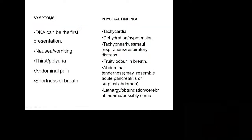The symptoms of diabetic ketoacidosis: whenever a diabetic patient presents with severe nausea and vomiting — the patient cannot retain anything and vomits whatever is eaten — it must be DKA. Other symptoms include increased thirst, polyuria, abdominal pain, shortness of breath, and dizziness. Signs include tachycardia with pulse rate 110 to 120, dehydration, hypotension, tachypnea, Kussmaul breathing — because this is acidotic breathing — the patient takes very rapid breathing, and respiratory distress.